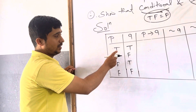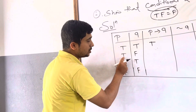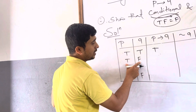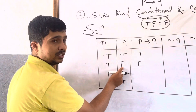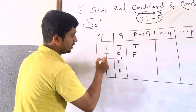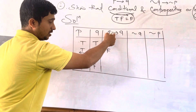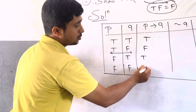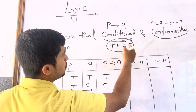In conditional, you have to remember: True then False gives False. Otherwise all are True. So True-True is True, True-False is False, False-True is True, False-False is True. Only one thing to remember: True then False is False in conditional.